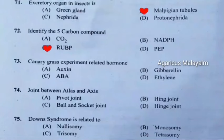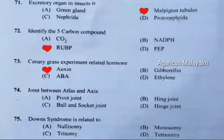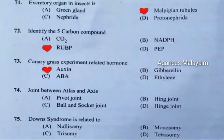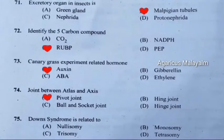Question 73: Canary grass experiment related hormone. Correct answer is Option A: Auxin. Question 74: Joint between atlas and axis. Correct answer is Option A: Pivot joint. Question 75: Down syndrome is related to. Correct answer is Option C: Trisomy.